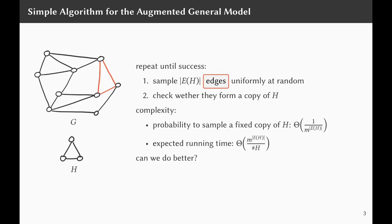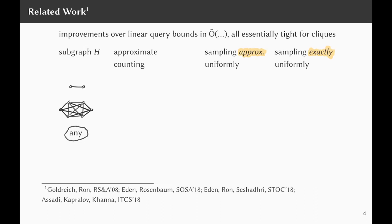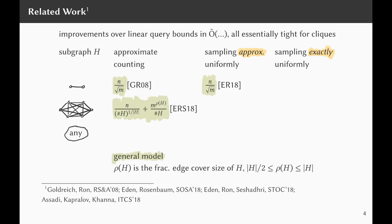Of course, it's likely that we can do better. Here are some improvements over linear query bounds that we know for the related problems of counting and sampling — and all of them are essentially tight for cliques. In the general model, Goldreich and Ron showed that approximately counting the number of edges requires only N over root M queries. Eden and Rosenbaum showed this is also sufficient for sampling approximately uniformly from the set of edges. For two-cliques, Eden, Ron and Sashadri showed that N over (number of copies of H)^(1/|H|) plus M^(edge cover size of H) over (number of copies of H) queries are sufficient.